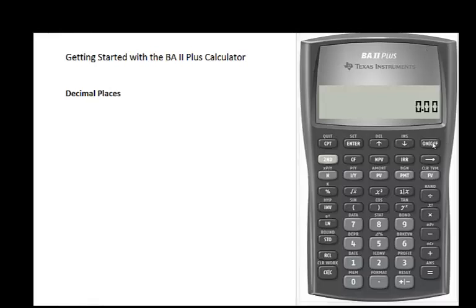When you turn on the BA II Plus Calculator for the first time, you'll notice the display is set to two decimal places. Since we will be needing more than two decimal places in some of our calculations, let us set the calculator to show as many decimal places as it can.